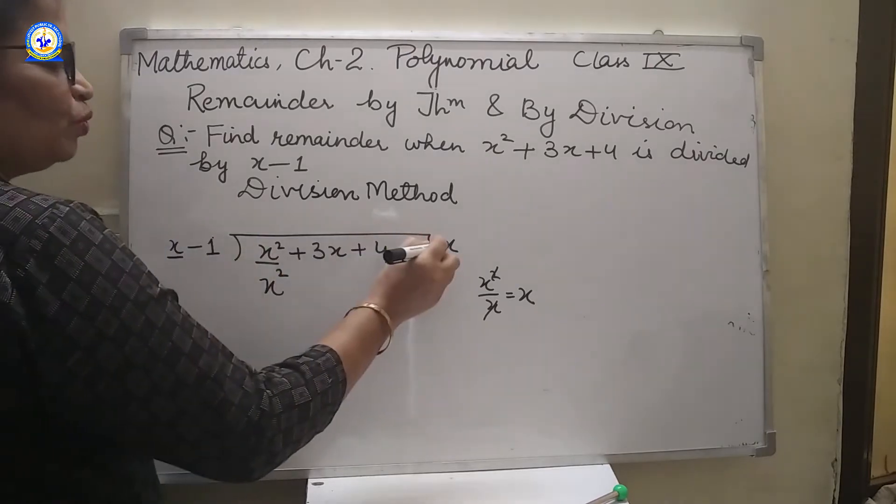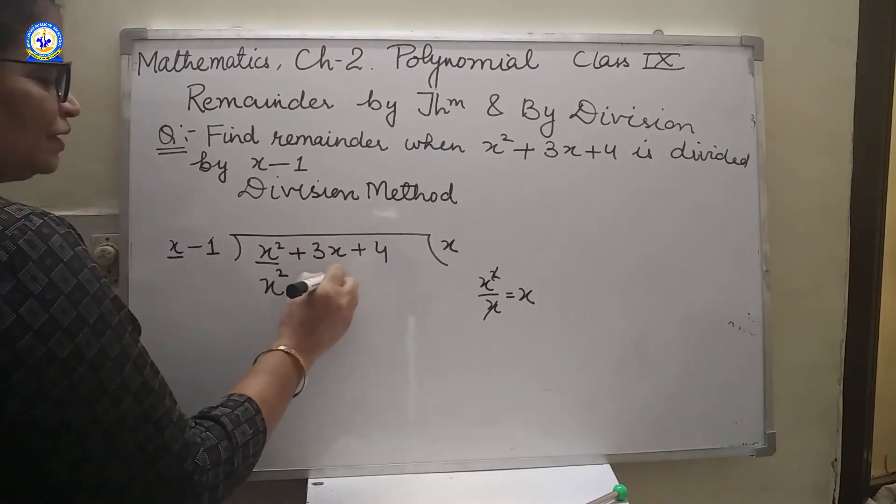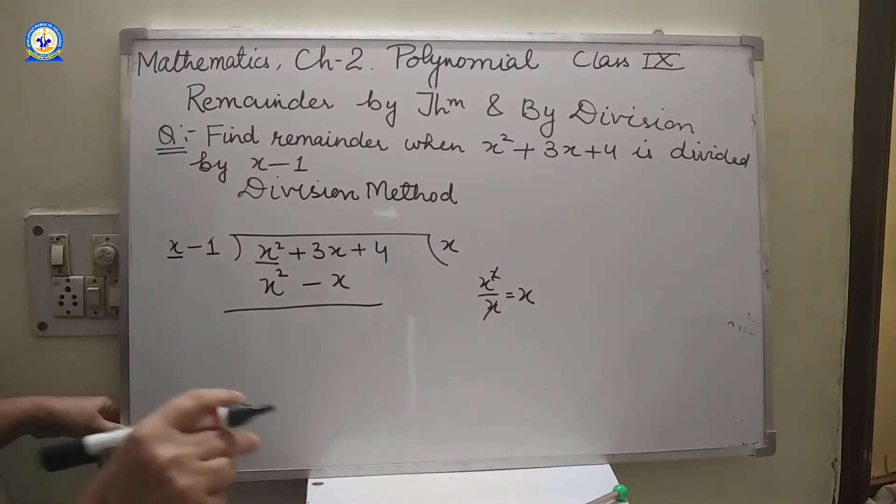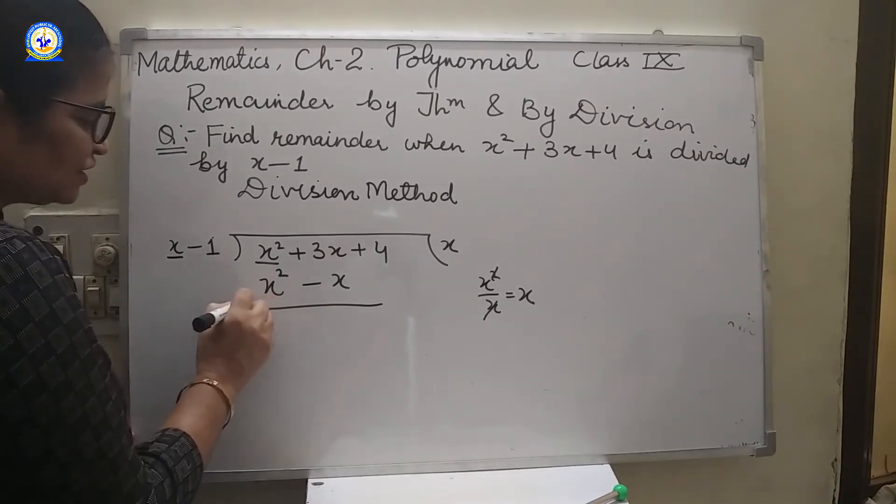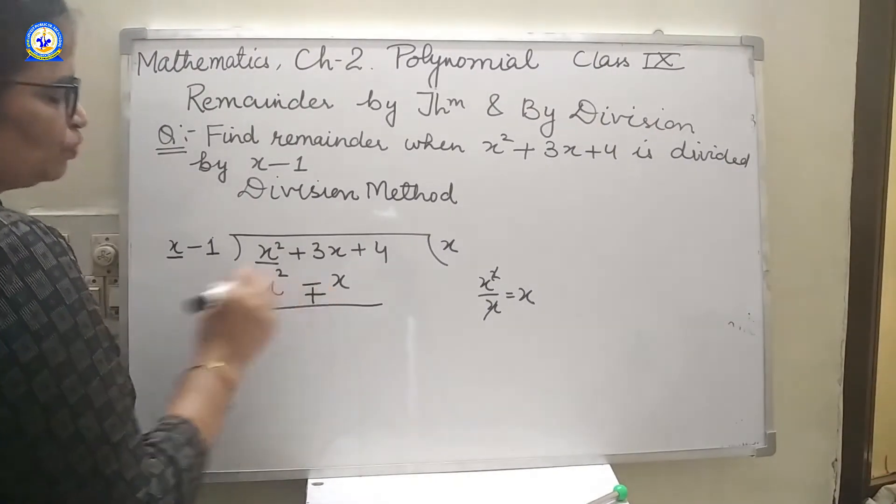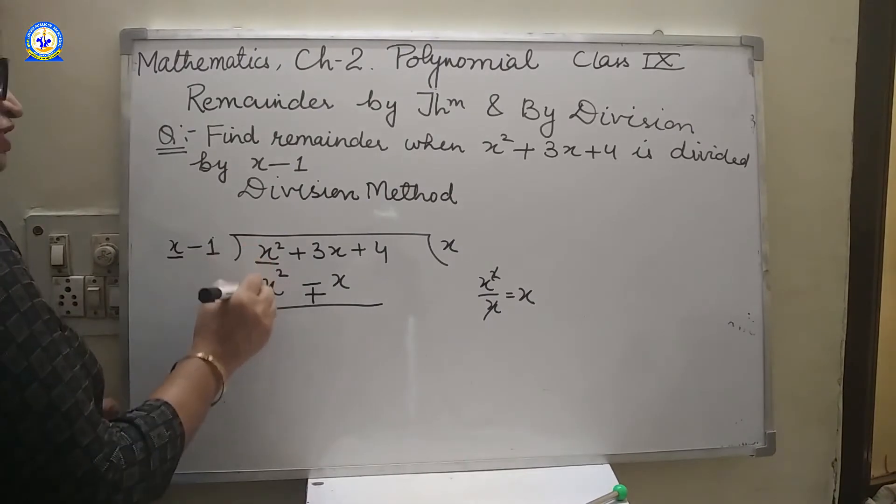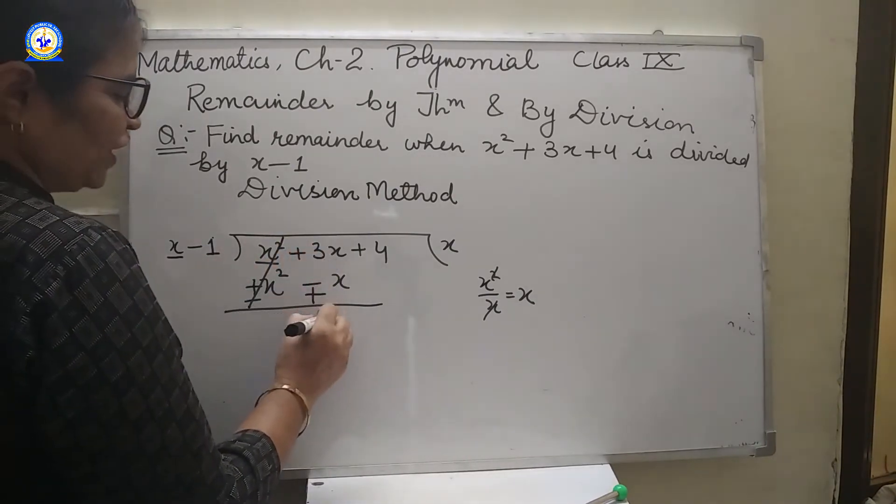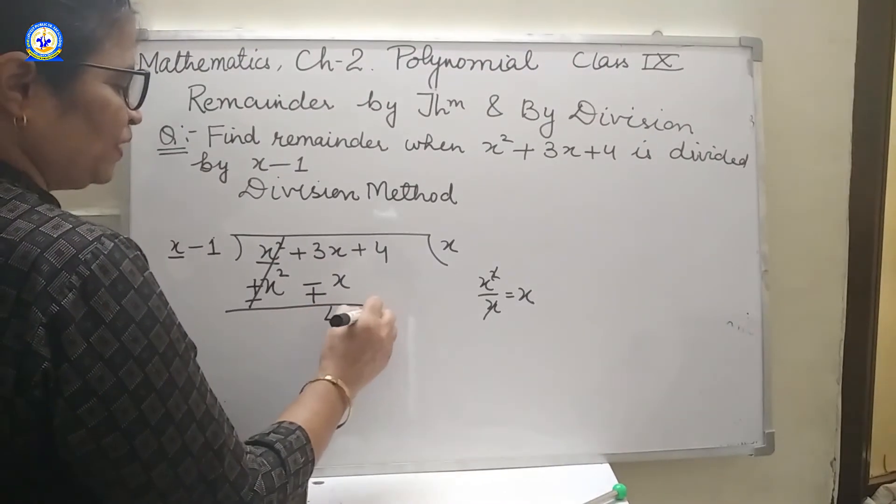Now minus 1 into x is minus x. As it is a general criteria that in division, we change the signs. Here is plus sign automatically, so minus. Here is minus, so plus. Now plus and minus both will be cancelled. So 3x plus 1x is 4x plus 4.